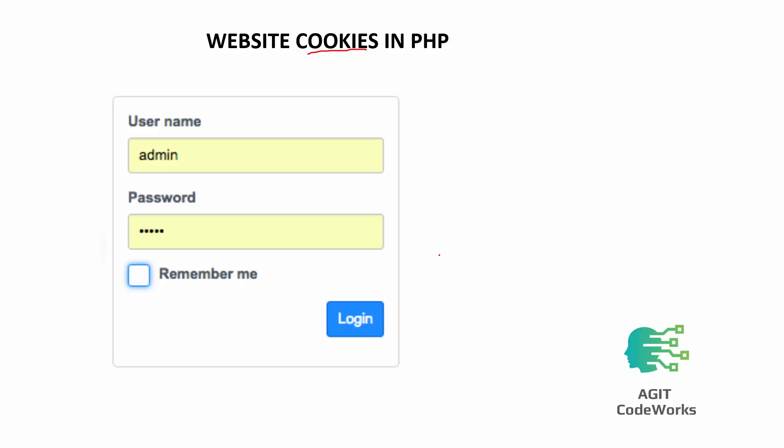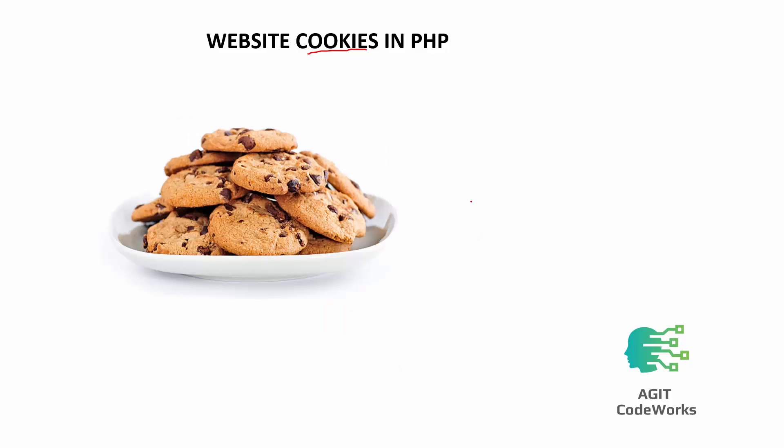When you check that 'remember me' checkbox, you allow the web application to track and identify your particular PC, so the next time you visit you will not have to log in with a username or password. This should be done when you have proper password authentication on your PC itself. Cookies help web applications track that information for convenience.